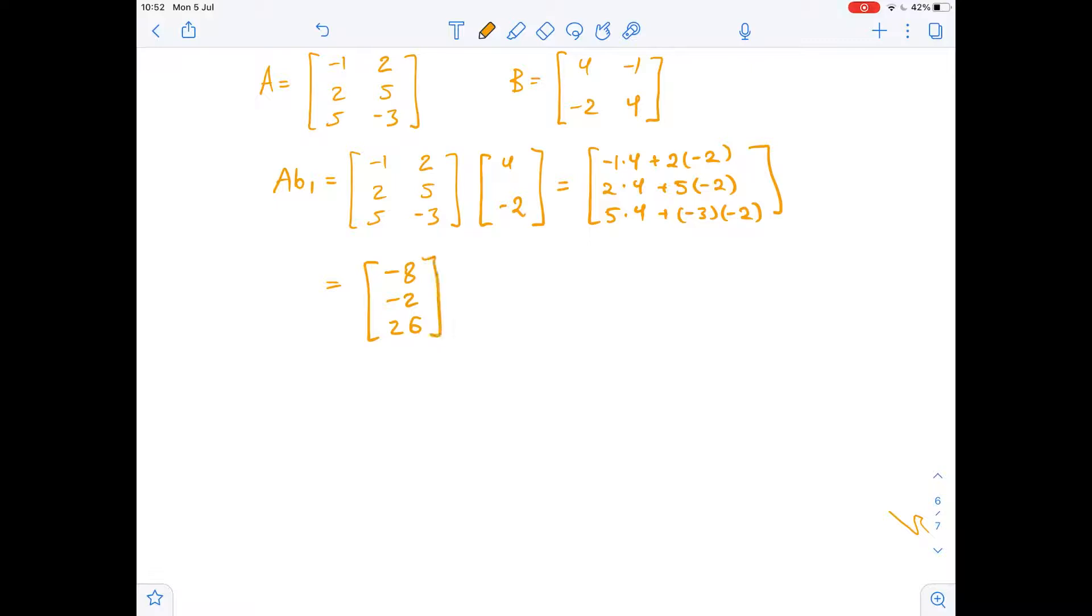Now we will find AB2. So AB2 equals matrix A times the second column of matrix B. So this equals negative 1 times negative 1 plus 2 times 4, 2 times negative 1 plus 5 times 4, and 5 times negative 1 minus 3 times 4.